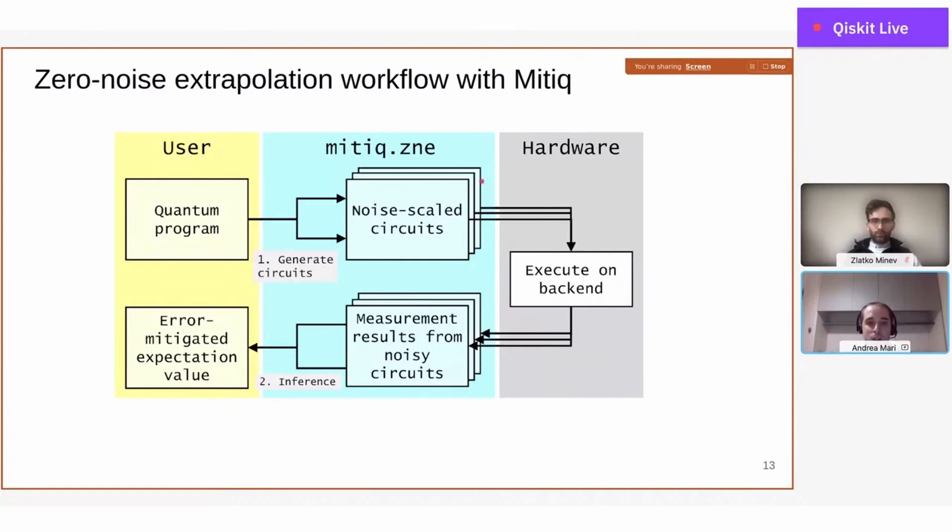To apply this, Mitiq compiles the input circuit into a set of noise-scaled circuits. These circuits are executed on the hardware, the measurement results are collected—these are all the blue points that we've seen before. And depending on the extrapolation model, you get an error-mitigated expectation value.